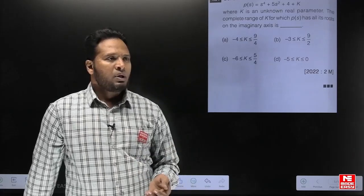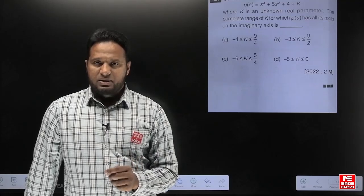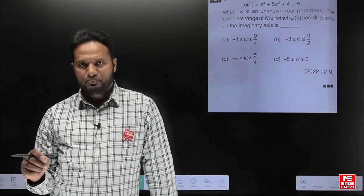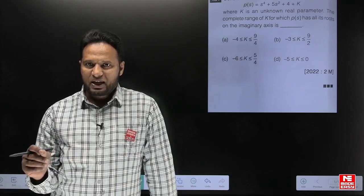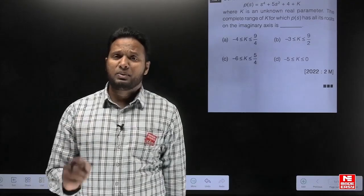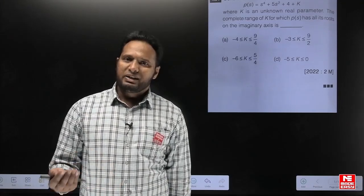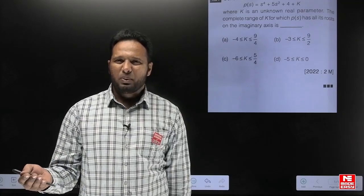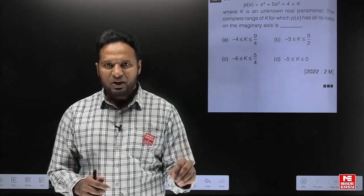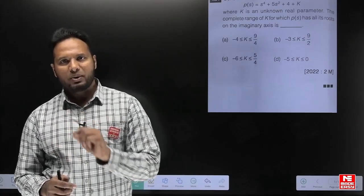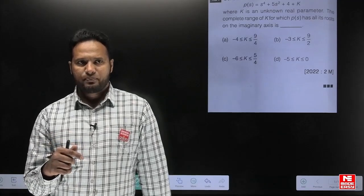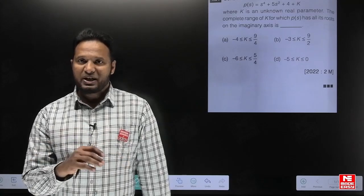Here we need to understand a key concept. For roots to lie on the j-omega axis according to R-H criteria, an entire row of the Routh array must become zero completely, and there should not be any sign changes among the first column elements. If a row becomes zero completely, it is not necessary for the roots to be on the j-omega axis — they can be on the left and right side of the s-plane as well.